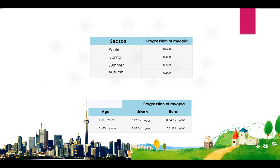Because people stay indoors in winter, we have more progression. The same is true when comparing urban to rural locations — there is more progression of myopia in urban locations because people spend less time outdoors, while rural people work outside on farms and therefore have less progression.